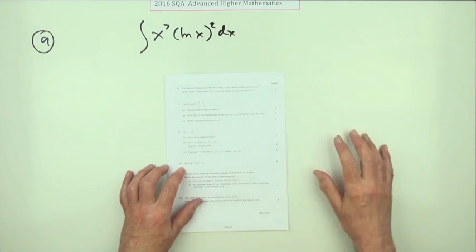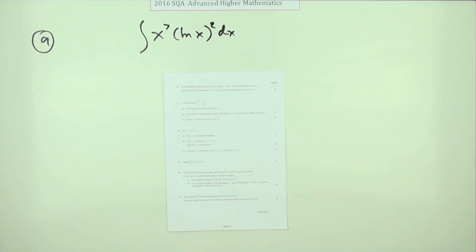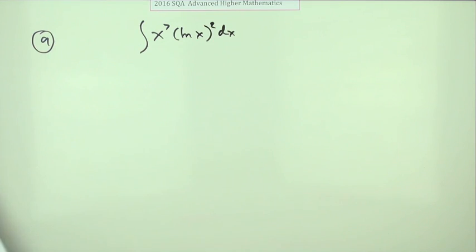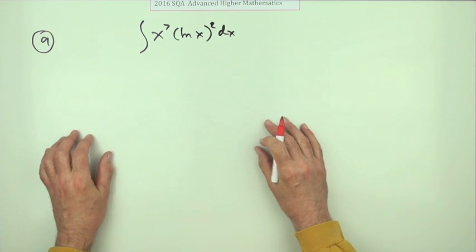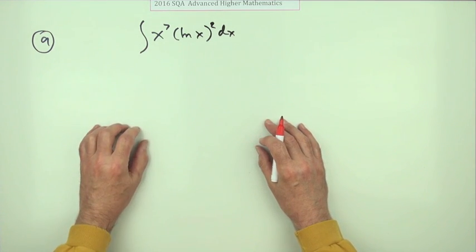Number nine from the 2016 Advanced Higher Maths. Six marks for an integration by parts. First thing to decide is which are you going to differentiate and which are you going to integrate. You're not going to try and whittle them down, that would just be ridiculous.